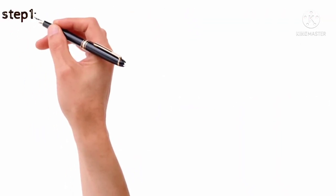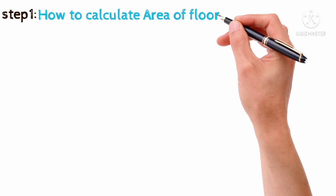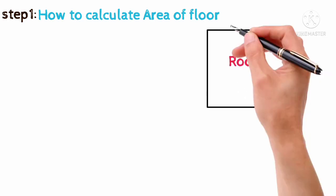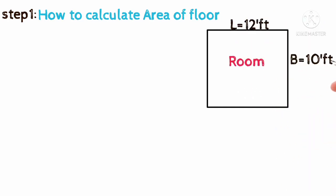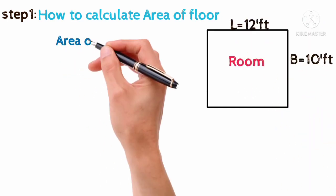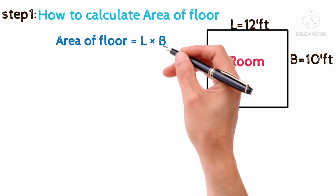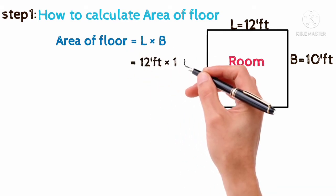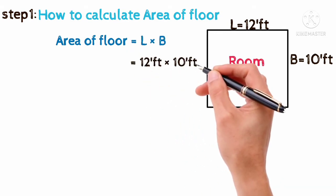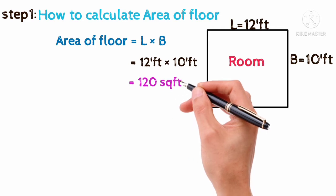Step 1: How to calculate the area of the floor. Room length equals 12 feet, breadth equals 10 feet. Area of floor equals length into breadth, equals 12 feet into 10 feet, equals 120 square feet.